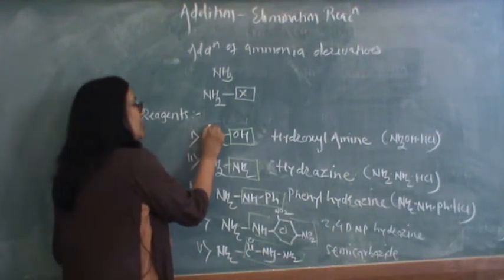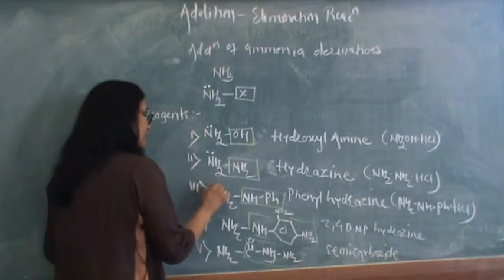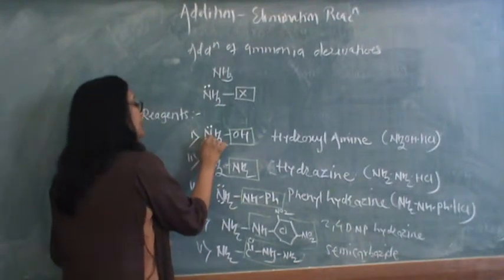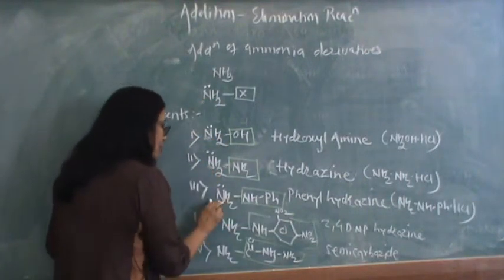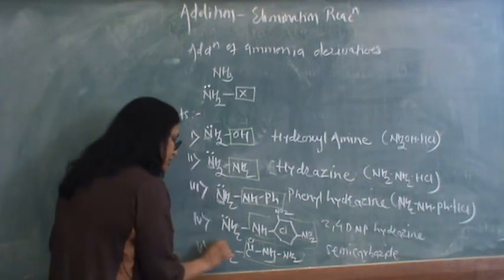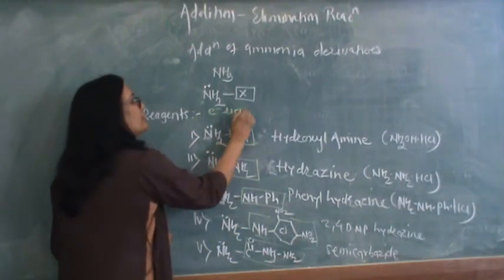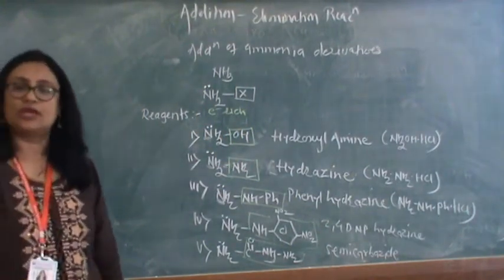Now one will find that all of these compounds contain nitrogen and we know that nitrogen has two lone pairs of electrons. Nitrogen has one lone pair of electrons on it and therefore it is electron rich, which can undergo nucleophilic addition to carbonyl compounds.